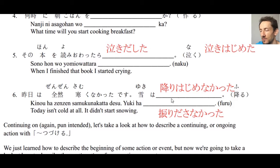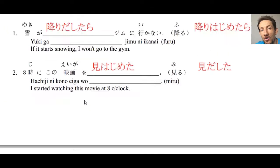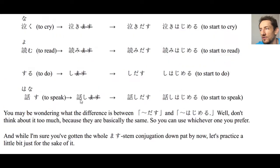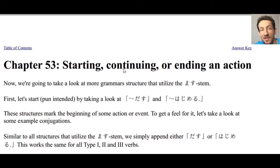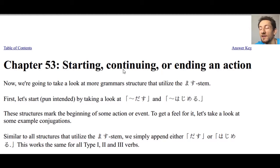That's it for part one. Next time we'll look at part two of this chapter, where we'll learn how to use tsuzuku and tsuzukeru to express continuing an action — it works very similarly to what we just learned. Thank you very much for watching. I always appreciate comments, likes, and subscribers, so please tell a friend if they want to study Japanese. You can also find my book on Amazon if you want to study ahead or support the series. See you next time — mata ne!